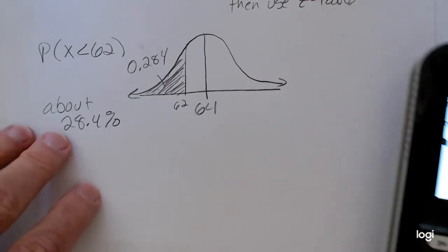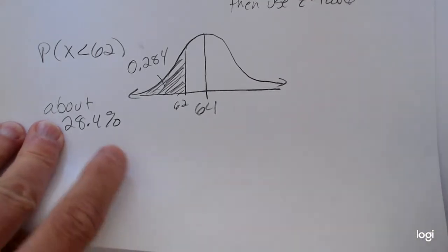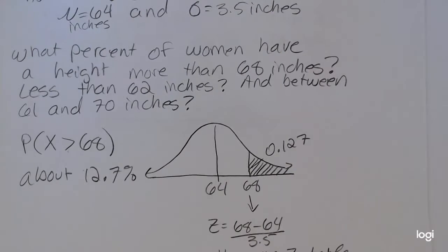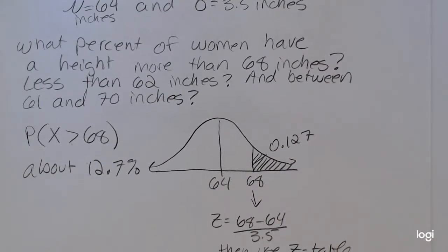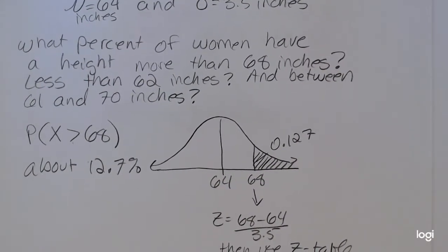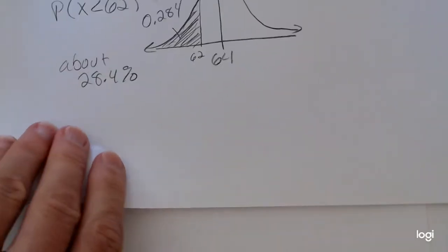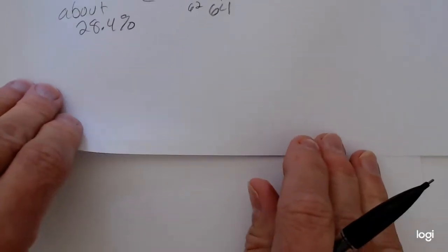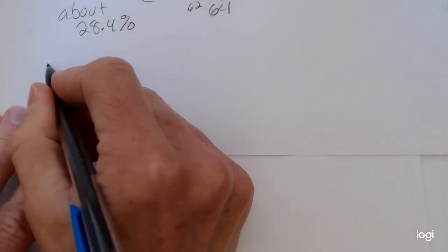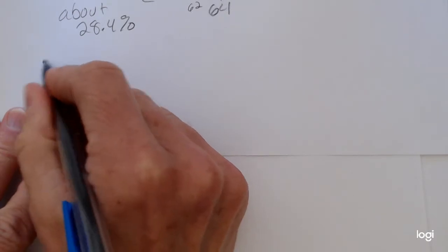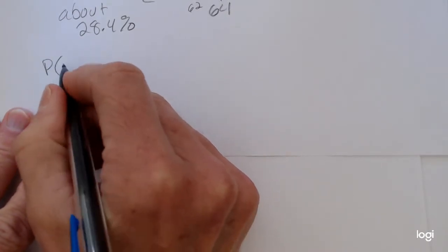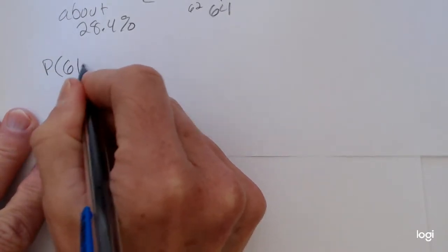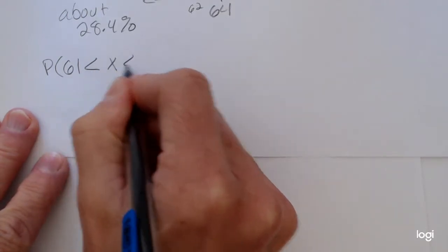Last but not least, we want to find the percent of women who have a height between 61 and 70 inches. So that is also the same thing as randomly selecting a woman whose height is between 61 and 70 inches. So in probability notation, this is going to be the probability 61 is less than x is less than 70.